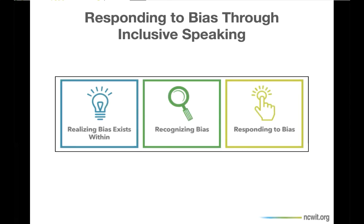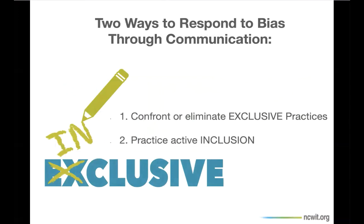No matter who we are, any time we communicate, we're presented with an opportunity to be inclusive or not. We'll build on your understanding of bias — you already understand that it exists in society, our systems, and ourselves, and you're able to recognize many of its different forms. Now we'll explore how to respond to it in our communications. There are two ways this can happen: first, we can work to eliminate exclusive or unconsciously biased behavior and language, especially those that are part of long-established habits or patterns of speech. Second, we can actively use language that is inclusive and models how we can all be champions of inclusion within our work. Here we present ways to do both.